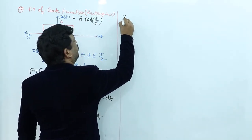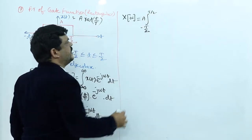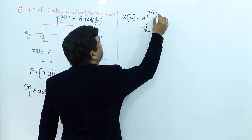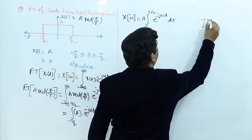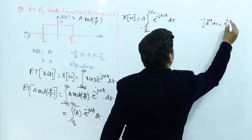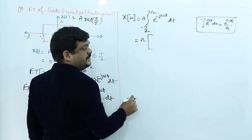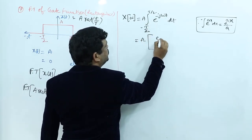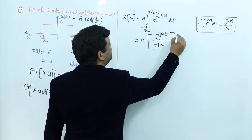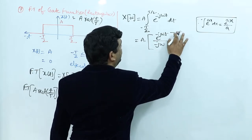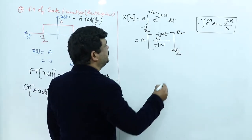Evaluating the integral: A is a constant taken outside. Integrating e^(−jωt) with respect to t gives e^(−jωt)/(−jω). Applying the limits from −T/2 to +T/2, substituting the upper limit gives e^(−jωT/2) and substituting the lower limit (with the minus sign) gives +e^(+jωT/2). So X(ω) = A/(−jω) · [e^(−jωT/2) − e^(+jωT/2)].